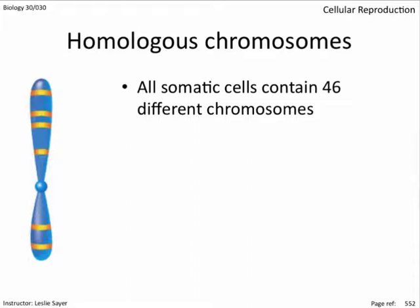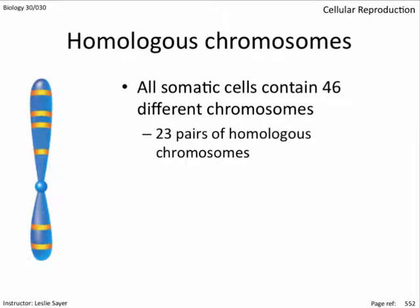All somatic cells contain 46 different chromosomes. Immediately prior to cell division, following DNA replication, there would be 92 chromatids, paired to their duplicate at the centromere, forming 46 pairs of sister chromatids. These 46 chromosomes are actually 23 pairs of homologous chromosomes — 23 came from mum and 23 came from dad. In actuality, only females have 23 homologous pairs; males have 22 homologous pairs plus an X chromosome and a Y chromosome, as females are XX and males are XY.